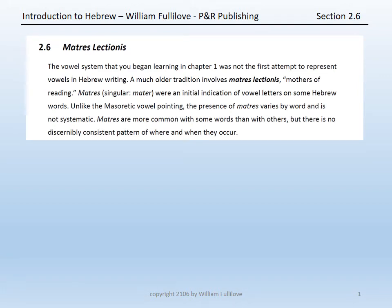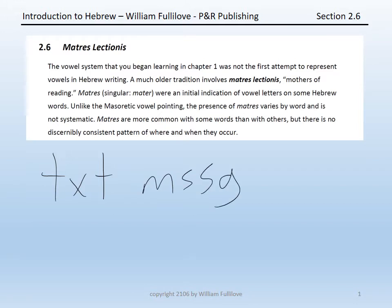We mentioned in chapter 1 that the vowel pointing we use to indicate vowels on the Hebrew consonantal text came from the Masoretes, and that it was supplied to the text at a time when Hebrew had ceased to be a living language. There was a concern that speakers would forget which vowels were appropriately applied to the text. A native speaker using a language can usually discern which vowels should be applied to consonants without seeing them — we used the example of text messaging. However, even native speakers will sometimes see a word that could be ambiguous, taking more than one set of vowel pointings. For instance, 'YR': is this 'year' or 'your'?